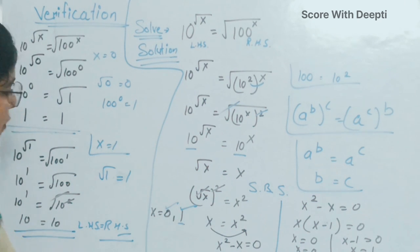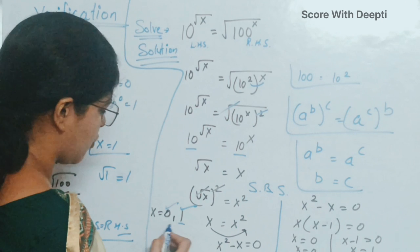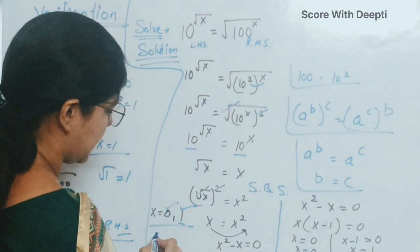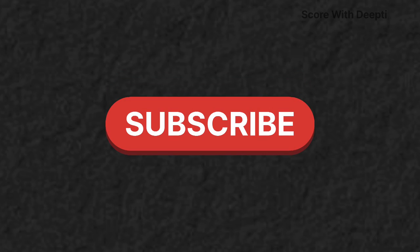Our answer is x equal to 0 and x equal to 1 is correct. I hope you found this topic clear. Thanks for watching. See you in the next video.